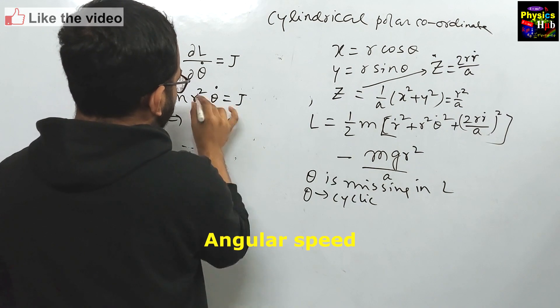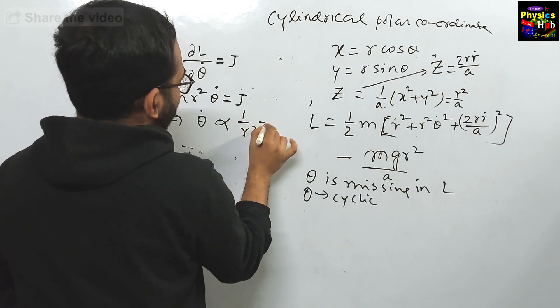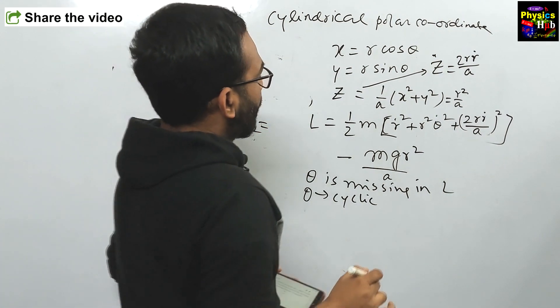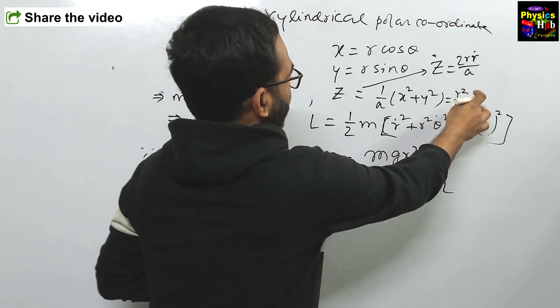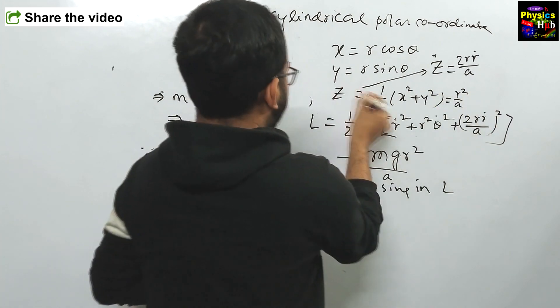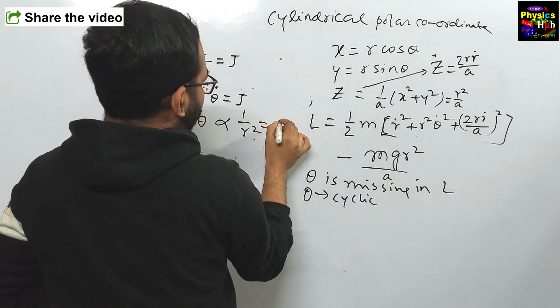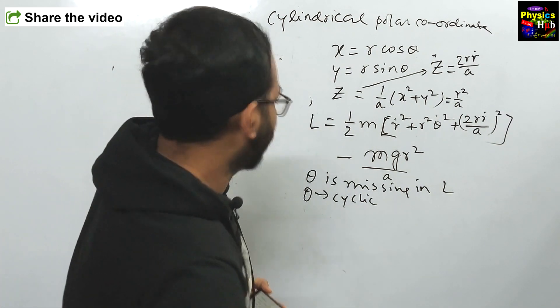You can see it is proportional to 1 upon r square. And what is r square? 1 upon r square. R square is equals to you can see az. So it is proportional to 1 upon z.